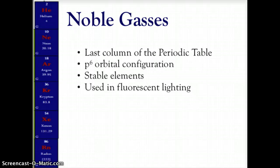The noble gases are the last column on the far right — column 18. These are the P6 orbital configuration with six electrons in their outermost shell. That full outermost shell makes these elements very stable. However, if you add energy through electricity, these become very bright and show different colors — which is what creates fluorescent lighting or neon signs.